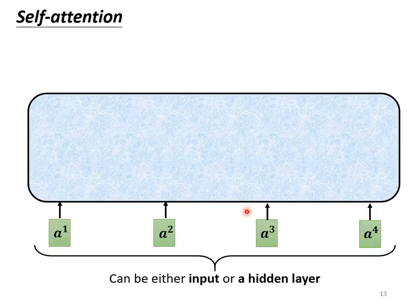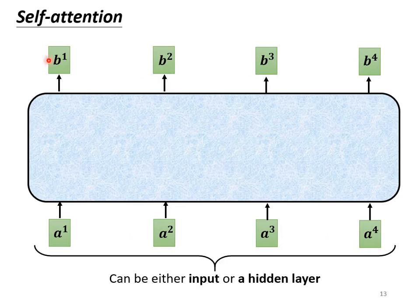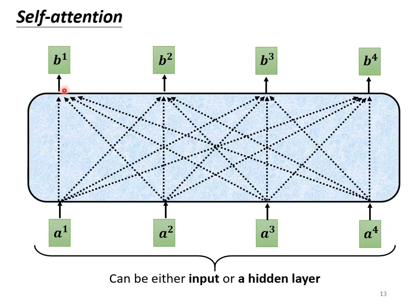How does self-attention work? The input of self-attention is a bunch of vectors — these could be the input of your entire network or the output of a hidden layer. We use 'a' to denote them, meaning they may have been processed beforehand. After inputting a sequence of vectors a, self-attention outputs another sequence of vectors b. Each b is generated after considering all a. So b1 is generated after considering a1 to a4, b2 is also generated after considering a1 to a4, and the same goes for b3 and b4 — all generated after considering the entire input sequence.